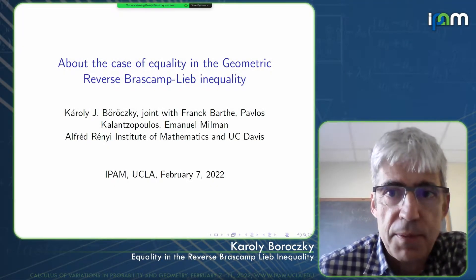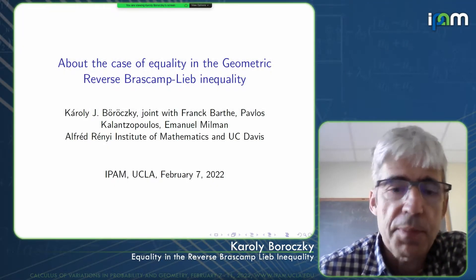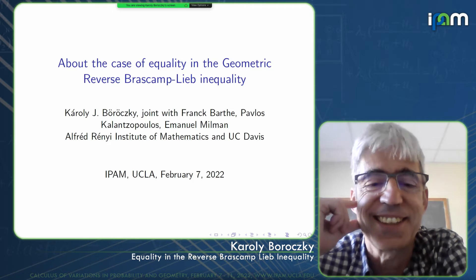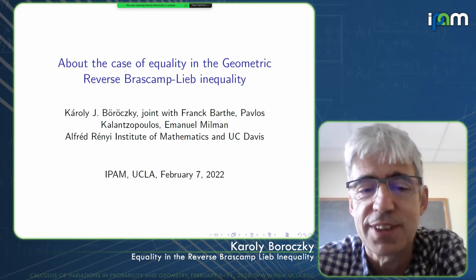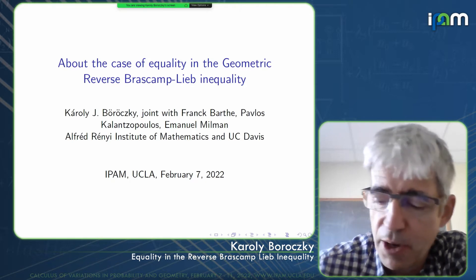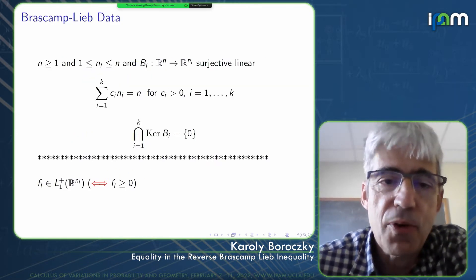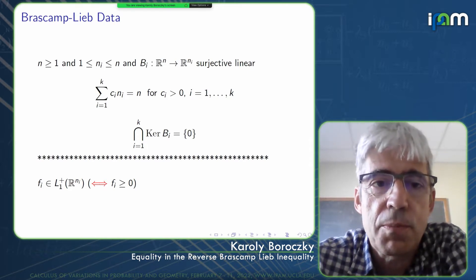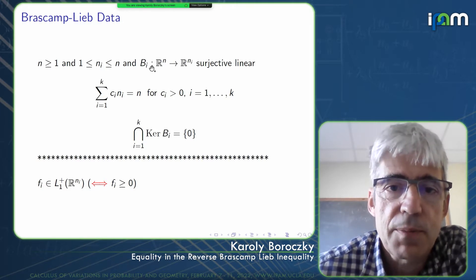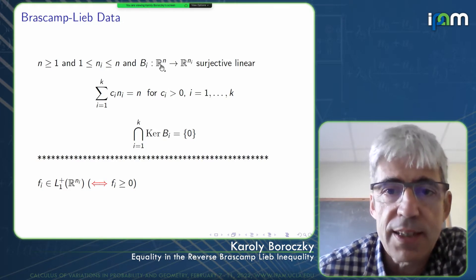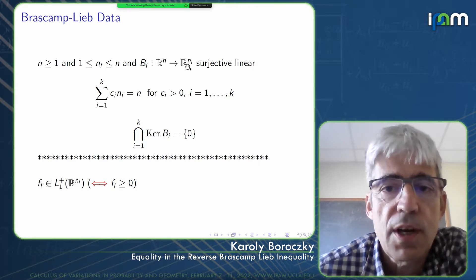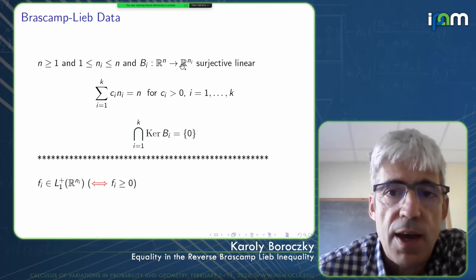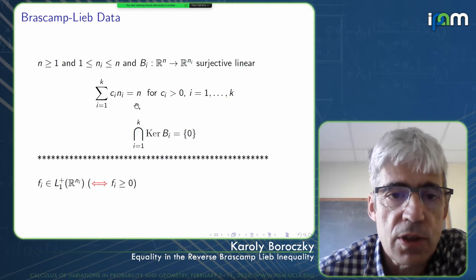Let me introduce what I mean by a Brascamp-Lieb inequality. There are two Brascamp-Lieb inequalities in this area. One is about the variance, which is a variation of the Prékopa-Leindler inequality. Now I am going to talk about another Brascamp-Lieb inequality where the data consists of surjective linear maps from R^n into various spaces of naturally smaller or equal dimension, with a condition on those dimensions.